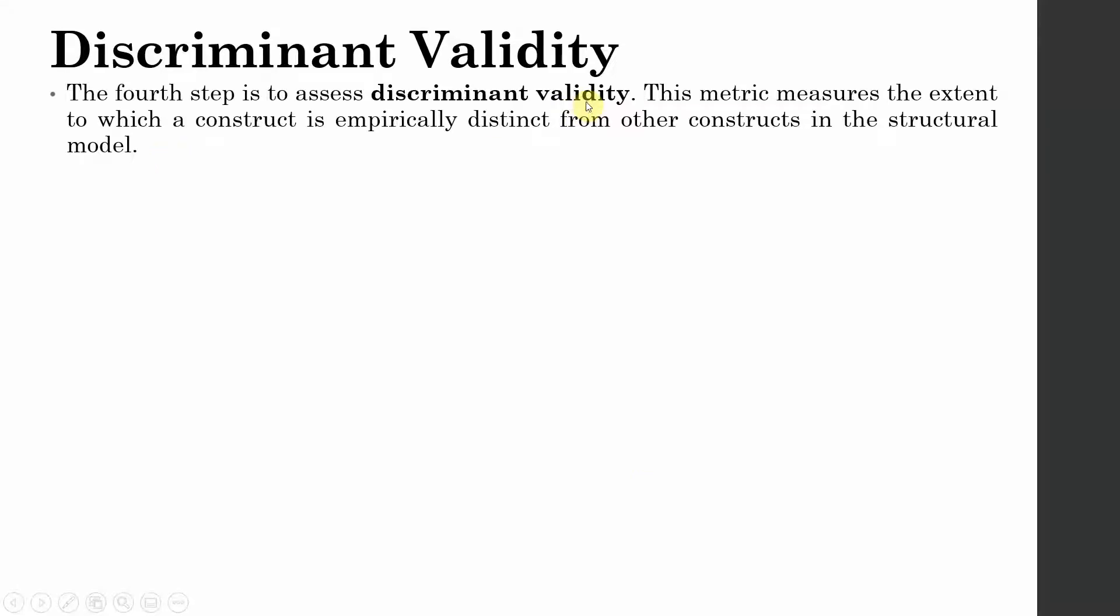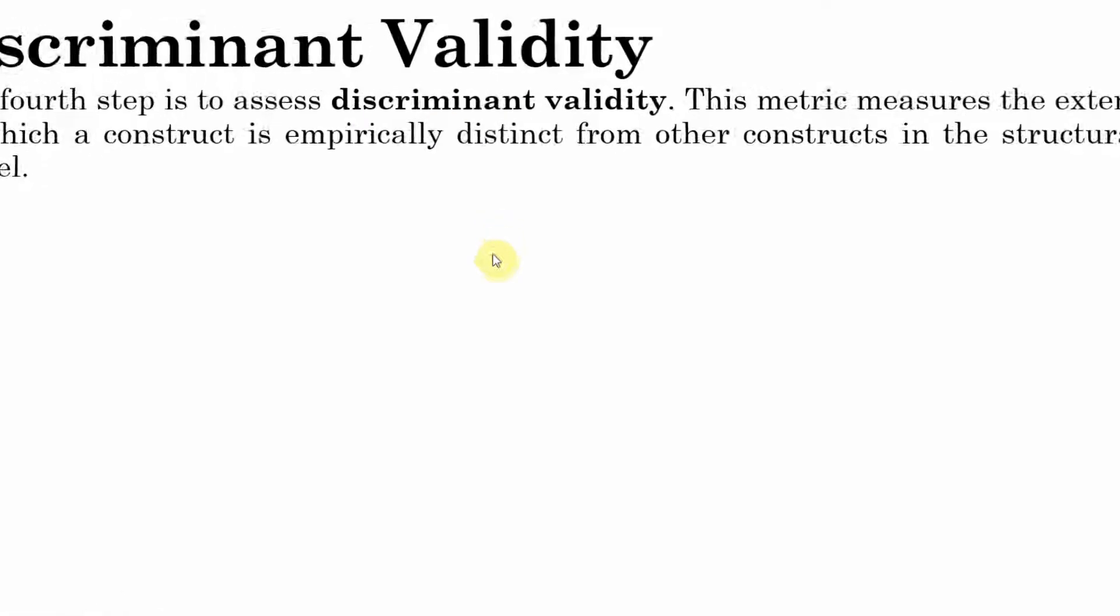Discriminant validity. This metric measures the extent to which a construct is empirically distinct from all the other constructs in the structural model. Each of these constructs in your study must be different from each other. In order to assess that empirically, we use discriminant validity assessment.